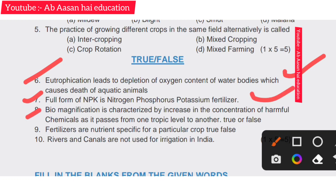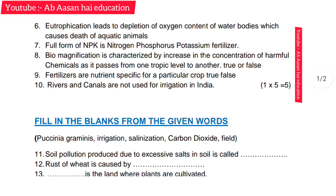Eighth: bio-magnification is characterized by an increase in the concentrations of harmful chemicals as it passes from one trophic level to another. True or false? The answer is true.